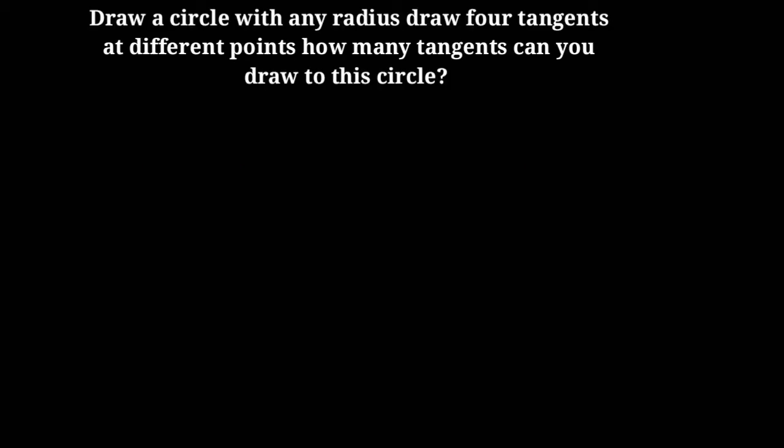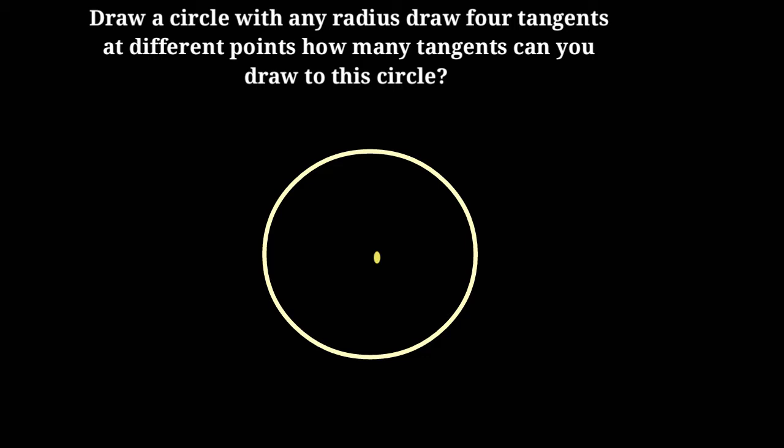So, let us start our activity. Draw a circle with any radius. Represent 4 points in different places on the circle. From those points, draw tangents.